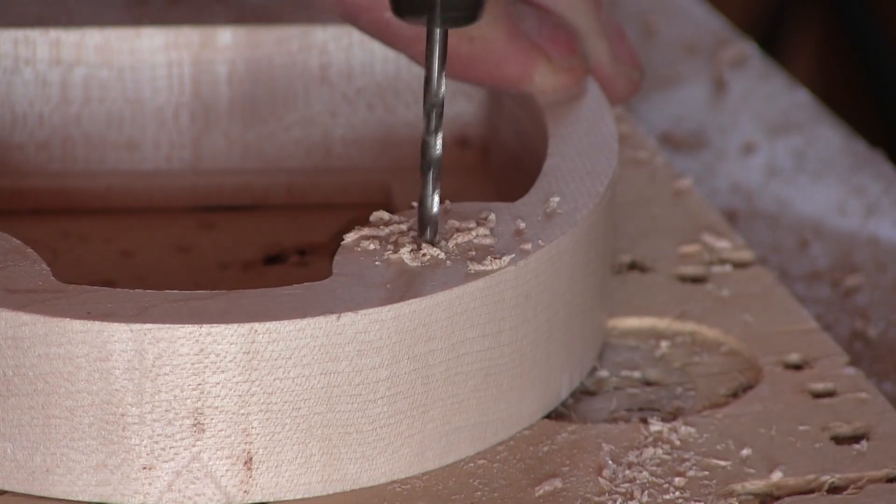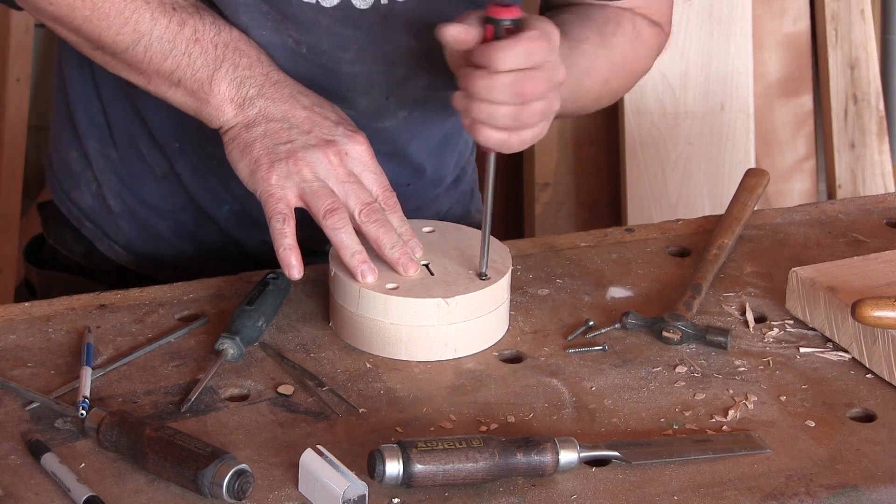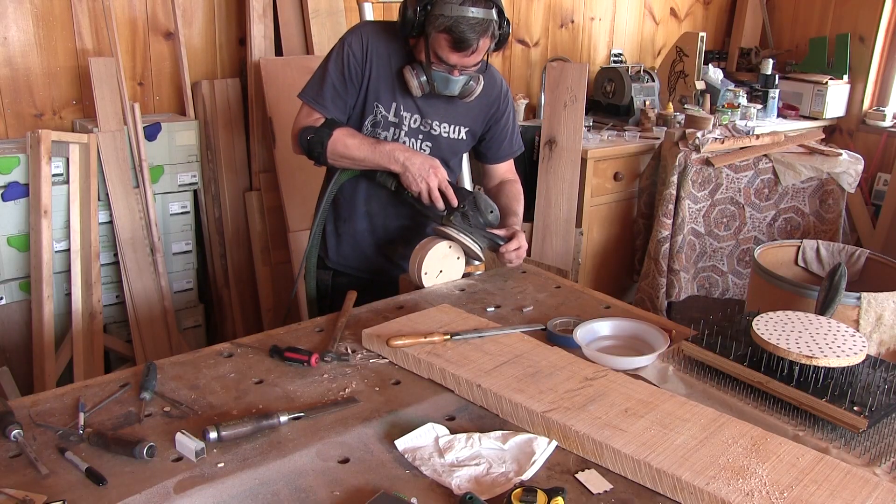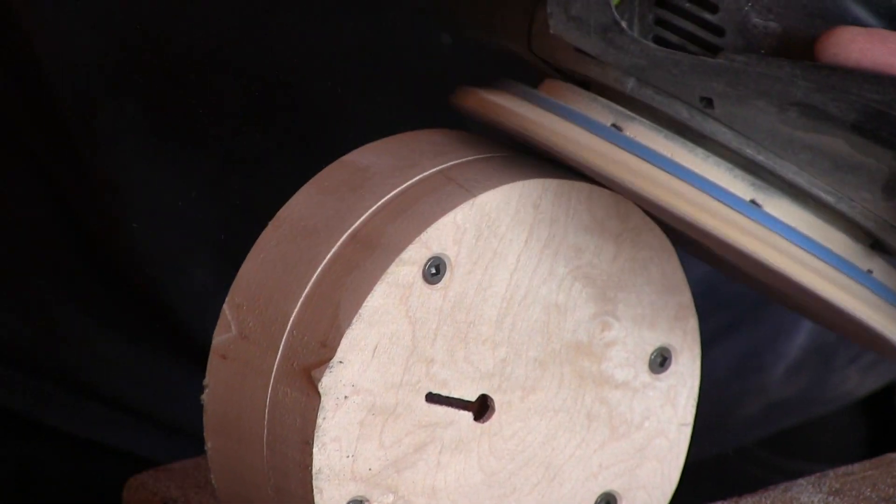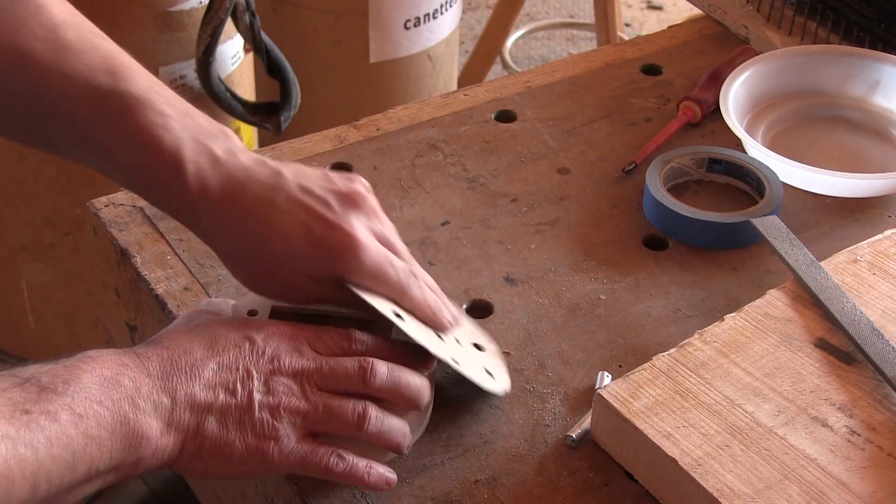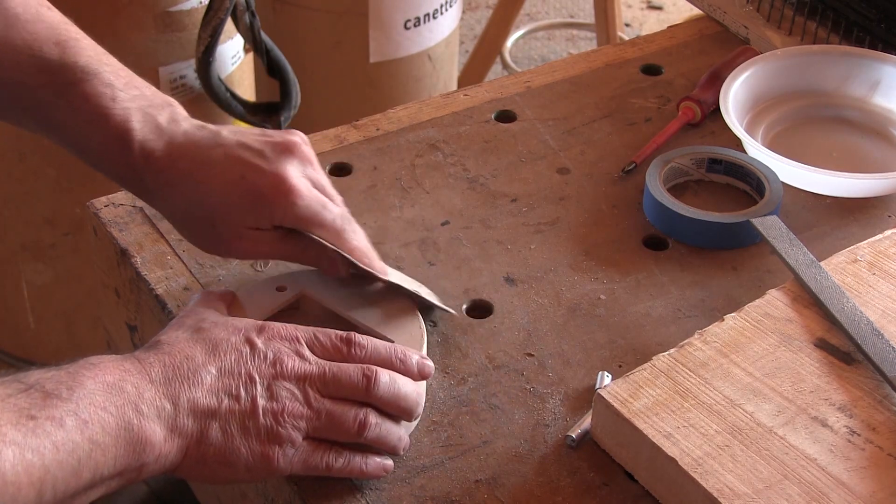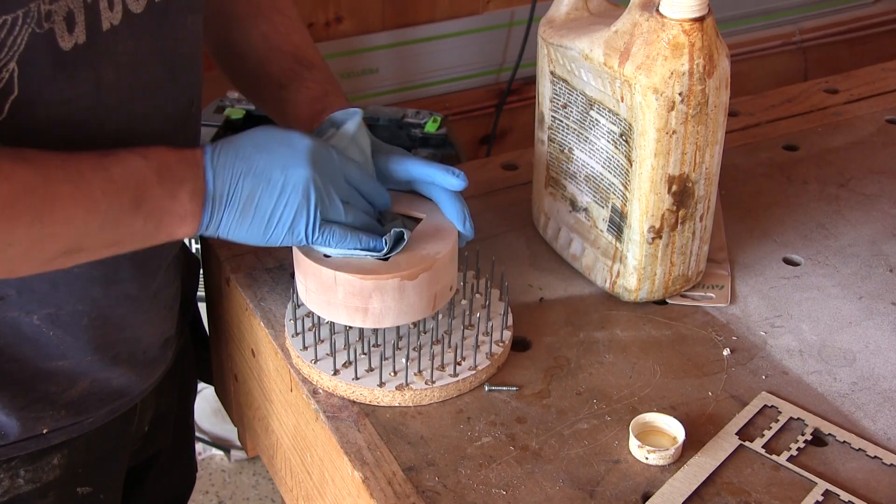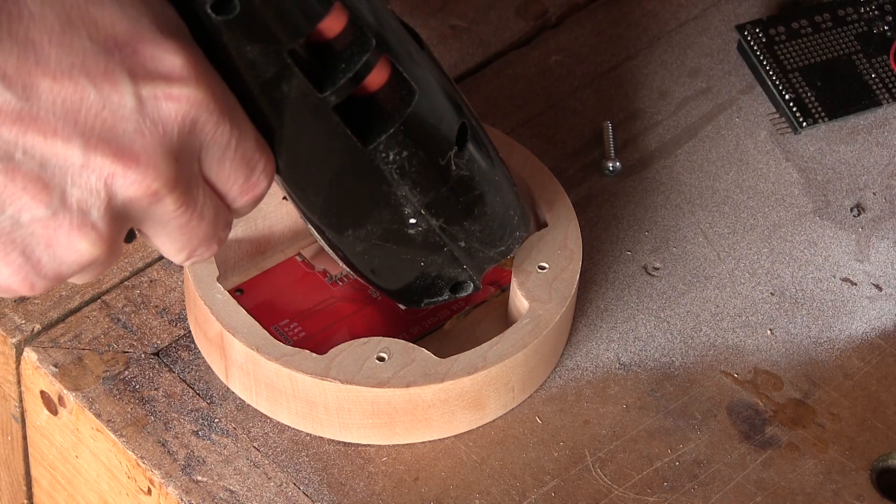Now that the holes are done, I can screw both pieces together and sand the box. The finish on this box couldn't be more simple. Linseed oil. When the oil is dry, I glue the screen with hot glue.